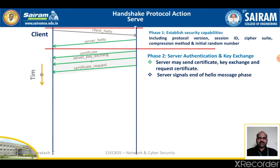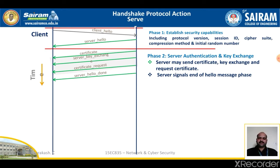The second parameter in the certificate request message is a list of the distinguished names of acceptable certificate authorities. The final message in phase two, which is always required, is the server hello done message, which is sent by the server to indicate the end of the server hello and associated messages. After sending this message, the server will wait for a client response. This message has no parameters.